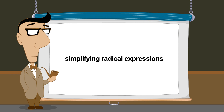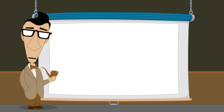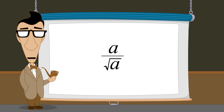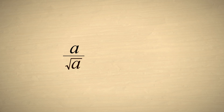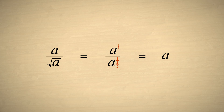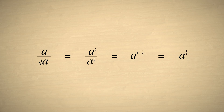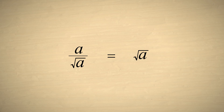Radical expressions can often be simplified by using the rules of exponents. For instance, let's simplify the expression a over the square root of a. We start by writing the square root of a as a to the one-half. If we write the a in the numerator as a with an exponent of one, we can subtract the exponents, giving us a to the one-half, or the square root of a. So a over the square root of a can be more simply written as the square root of a.